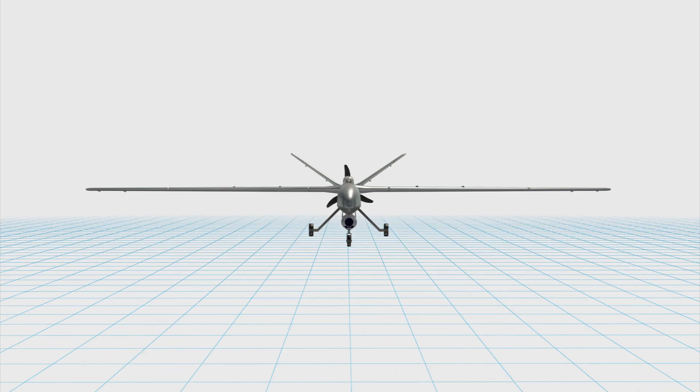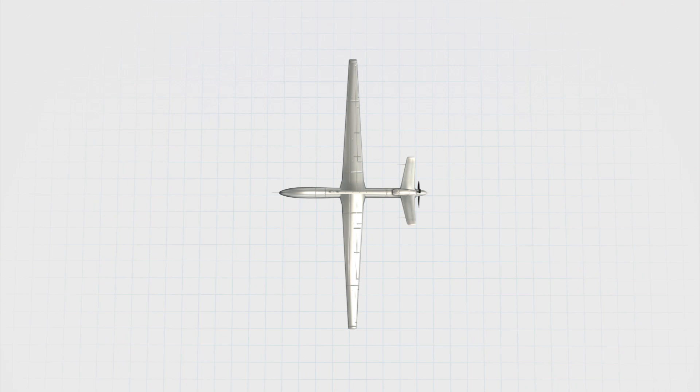The Anker Unmanned Aerial Vehicle, UAV, has a wingspan of 17.3 meters and a length of 8 meters.